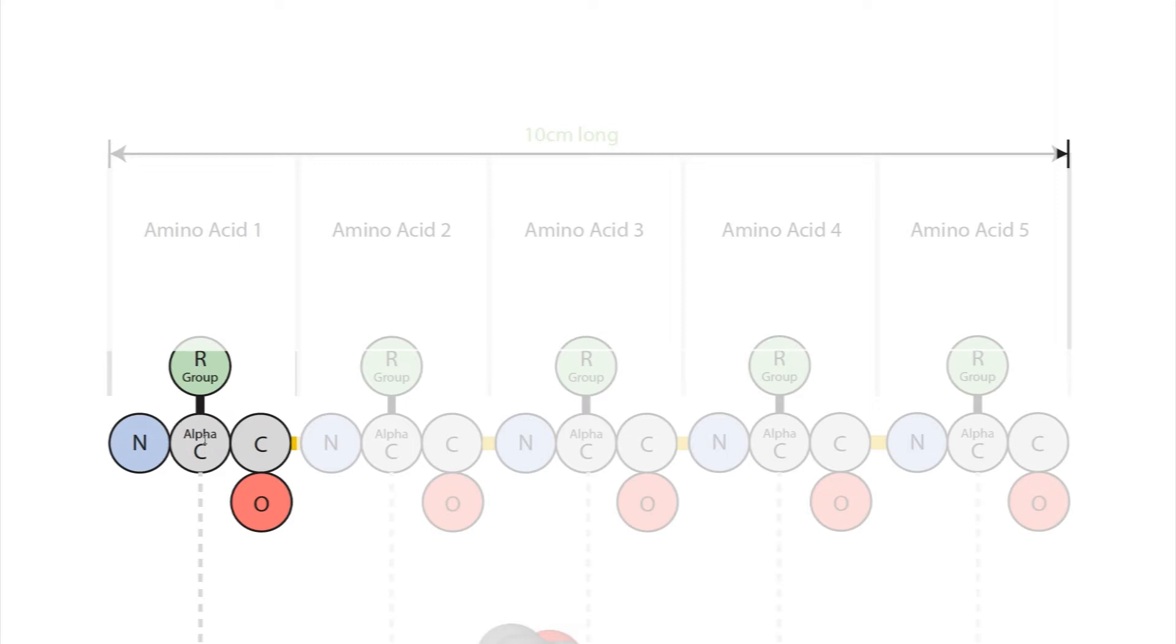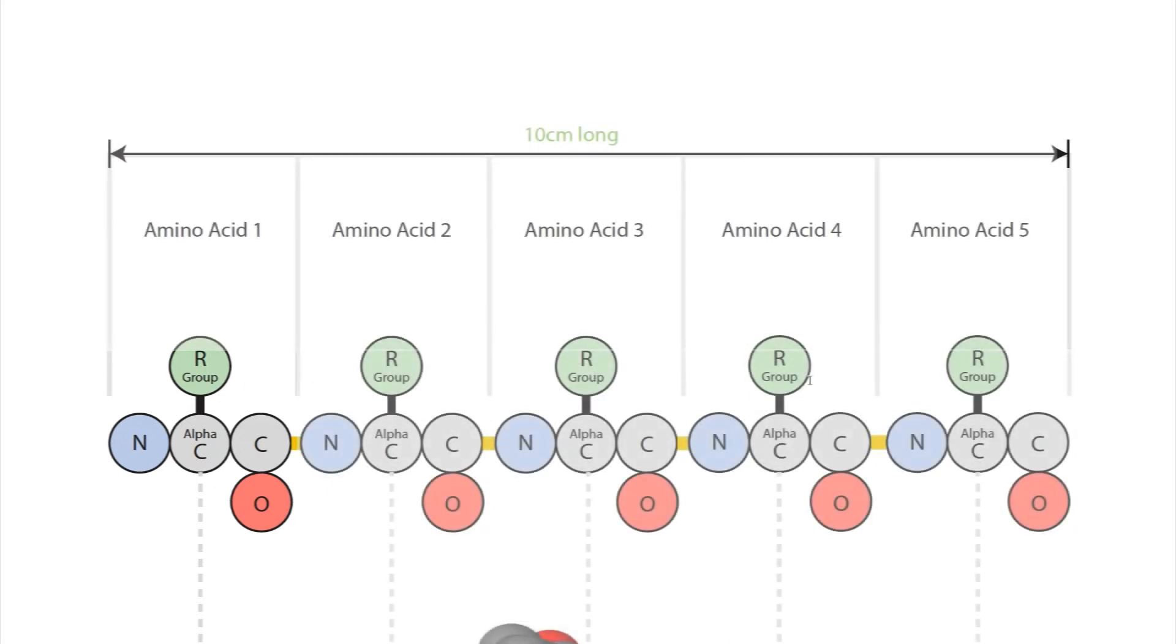There's an alpha carbon, that's the main carbon at the center of each amino acid that the R group attaches to. And then at the beginning of the alpha carbon, there's a nitrogen, part of an amino group. And after the central alpha carbon, there's a carbon-oxygen pair called the carboxylic acid group. So if you just look at these 5 amino acids together, it would make sense that the length of your tuber, your modeling material, would be 10 centimeters long, at a scale of 2 centimeters per amino acid.